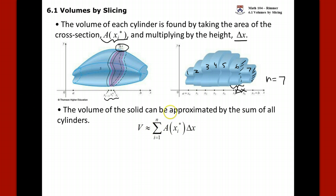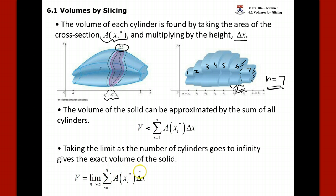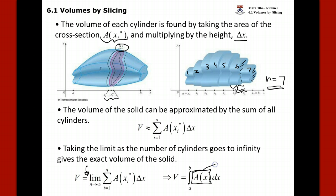That summation is an approximation to the volume, but we want the exact volume. So we let the number of sub-intervals go to infinity — we take the limit as the number of cylinders goes to infinity. At that point we have a Riemann sum, and using the definition of the integral, we get exactly the volume. The hardest part is figuring out the cross-sectional area formula.